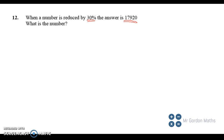So there are a couple of ways to do this. You can think to yourself, when I reduce a number by 30%, what percentage is left? Well, 100 take away 30 is going to leave me with 70.